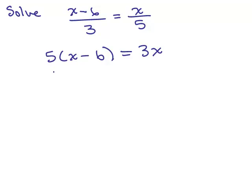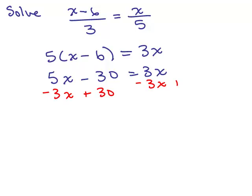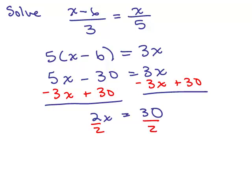So we've got 5x minus 30 equals 3x, and we could subtract 3x from both sides and add 30 to both sides. So we have 2x equals 30, and if we divide both sides by 2, we get x equals 15. If that checks, the answer then is 15.